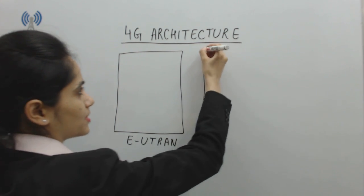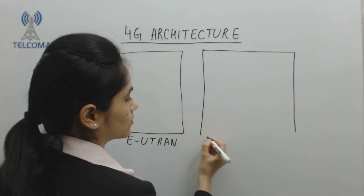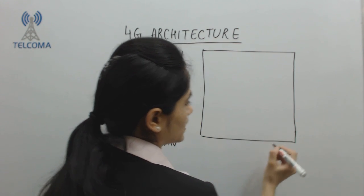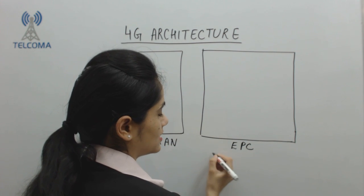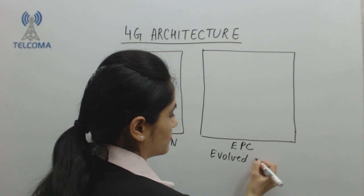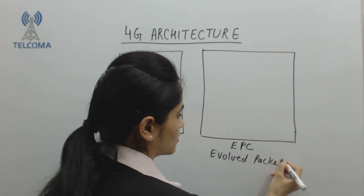The EUTRAN part is required to connect to the core network. The core network of 4G is EPC, which stands for Evolved Packet Core.